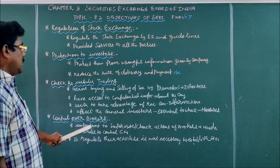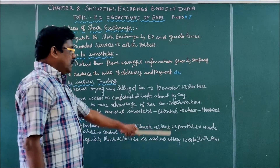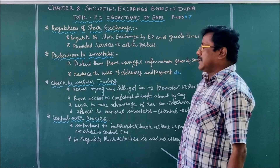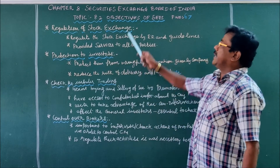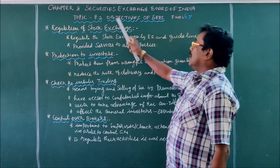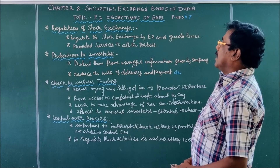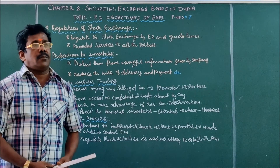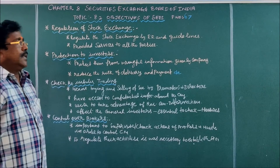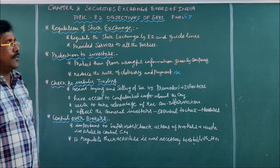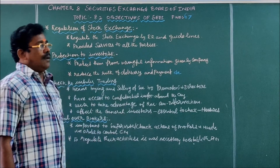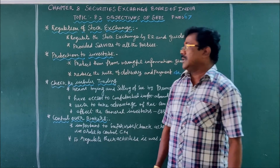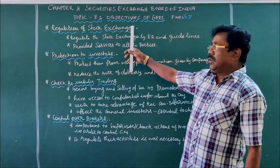The fourth objective is Control over Brokers — putting restrictions on the activities of brokers and intermediaries to regulate them by implementing necessary rules, regulations, and guidance. That ends topic 8.2. In chapter 8 so far we have discussed: the introduction to the Securities and Exchange Board of India, 8.1 Organization Structure, 8.2 Objectives, and 8.3 Functions of the Securities and Exchange Board of India. Go through all these topics as they are very important for exam questions.